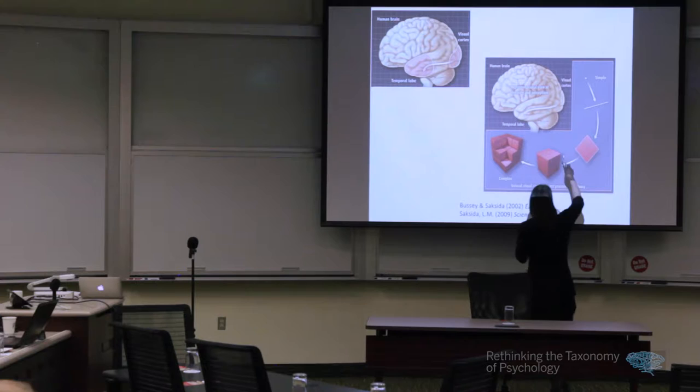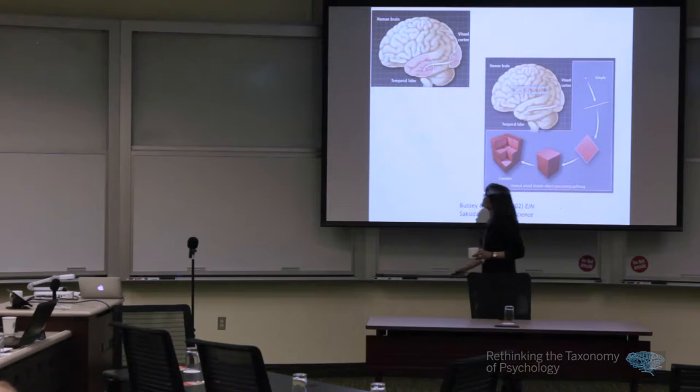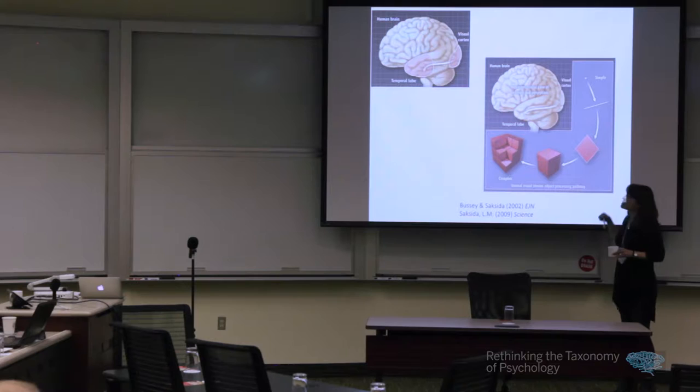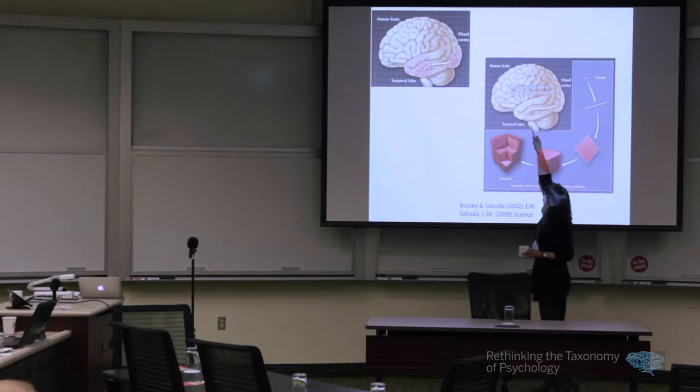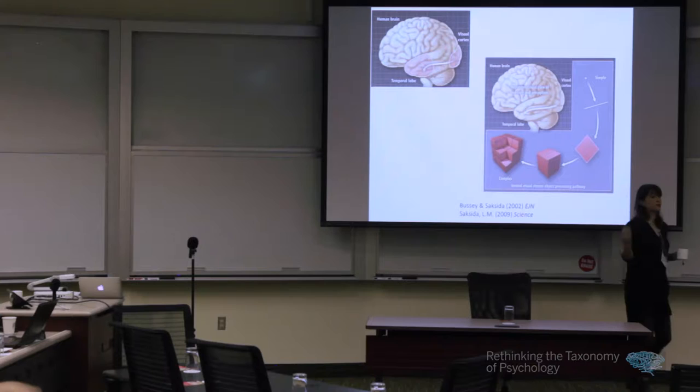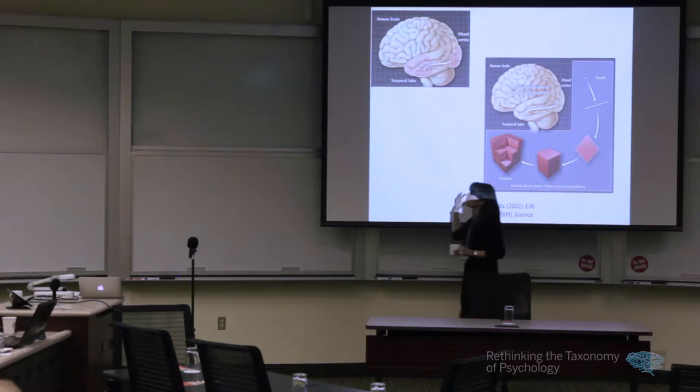One thing that was very clear, discussed yesterday, was that the representations of visual information as you move down the ventral visual stream become more and more complex. You get neurons early in the ventral visual stream that respond to very simple aspects of stimuli — lines and edges. As you move downstream you get neurons responding to conjunctions of these features. By the time you get to inferotemporal cortex at the end of the ventral visual stream, you've got neurons responding to very complex stimuli. What we started to think about was whether this representational hierarchy extends further beyond the ventral visual stream and into the medial temporal lobe.